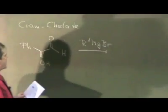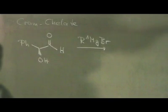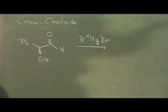So if we add an organometallic compound, then this model would predict that out of the two diastereomers, one is formed preferentially.